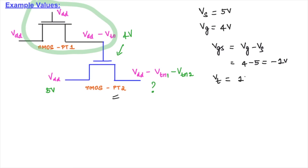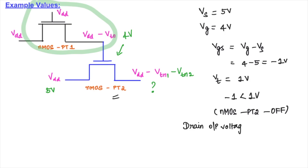The second pass transistor is in off condition. We need to determine what drain output voltage it will retain — whether it retains 4 volts or some other value. The 4 volt obtained from pass transistor 1 was the last voltage with which it was able to turn on. We need to find when the second pass transistor would have turned on and what previous voltage it would have retained.